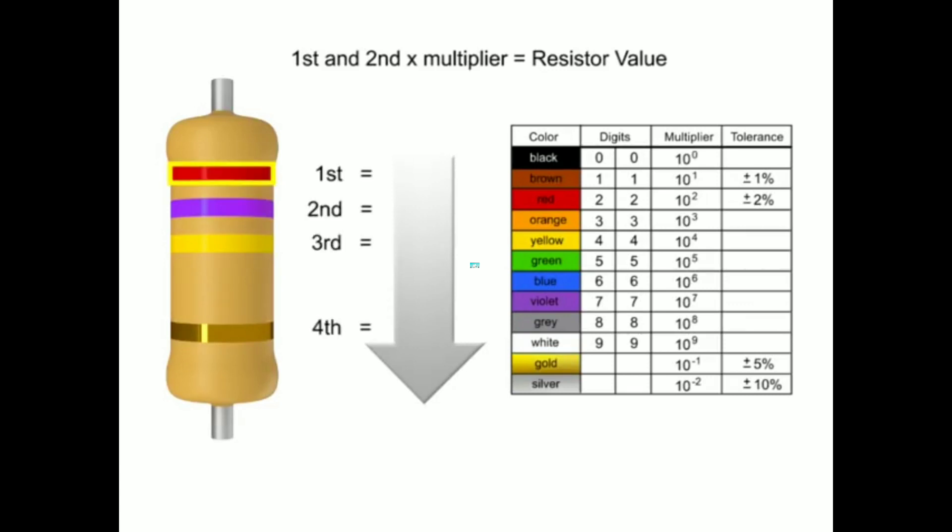The first band is red, so the first digit value is two. The second band is violet, so digit two is seven. The third band is yellow, so we multiply the first two numbers by ten to the fourth or ten thousand.